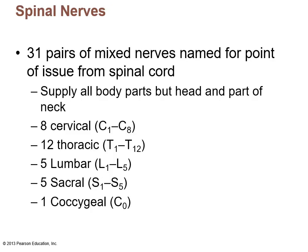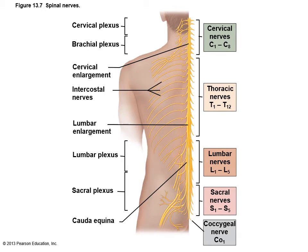Now for spinal nerves: there are 31 pairs of mixed nerves named for the point of issue from the spinal cord. They supply all body parts except the head and part of the neck. They're broken into groups: eight cervical nerves C1 through C8, twelve thoracic T1 through T12, five lumbar L1 through L5, five sacral S1 through S5, and one coccygeal — not to be confused with C1.